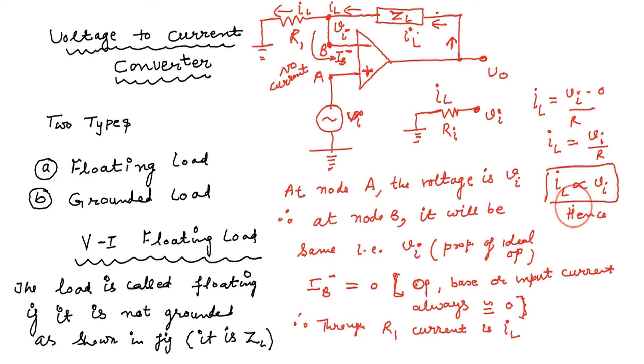This is R1, so IL is proportional to VI because the R1 is constant. So this is how we convert voltage to current. Because we applied voltage at the non-inverting terminal equal to VI, and we are getting proportional current, that is IL.